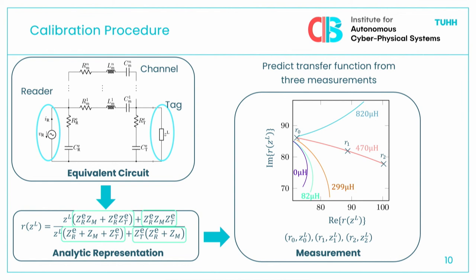The idea is that the tag sends a pilot message at the beginning where it switches between three different load impedances. The reader receives those and knows three measurement points — what was the load impedance and what did it receive — and can then predict for all 5,000 possible loads what it would receive. In the diagram shown on the right, there's a line for every reactance we can choose at the tag, and we can move along the line by changing the resistance. The reader can then say: I want a 4-QAM modulation — which four points are furthest apart? It chooses those four points, sends that information to the tag, and now the tag has the best possible set of load impedances.